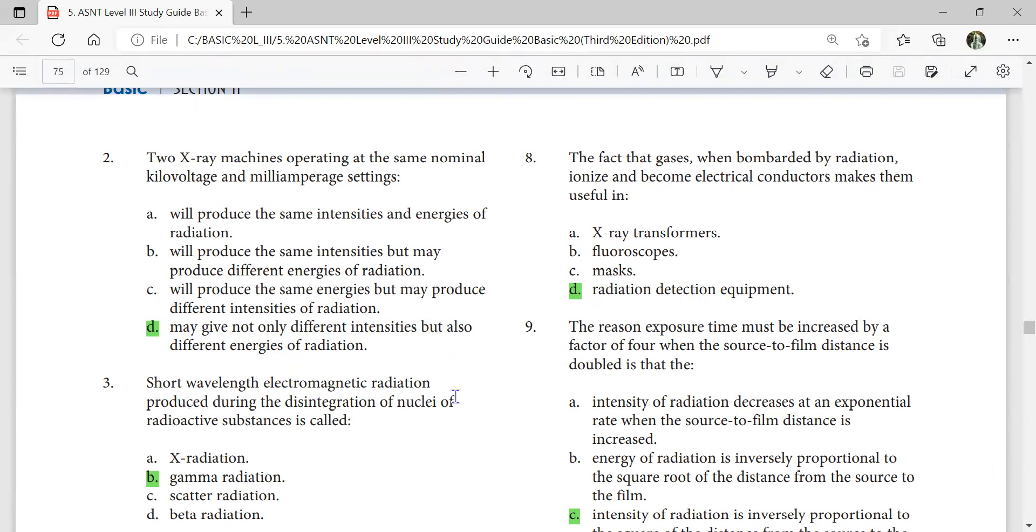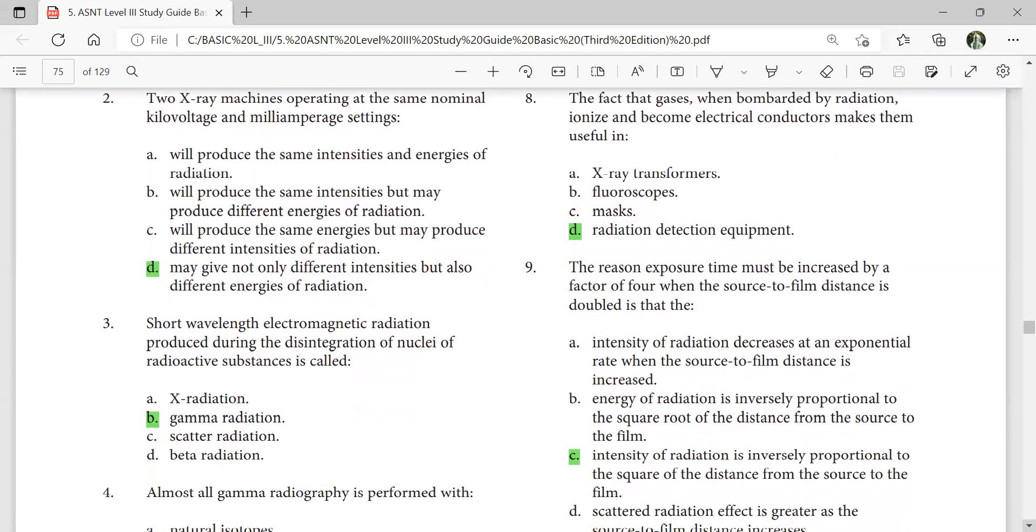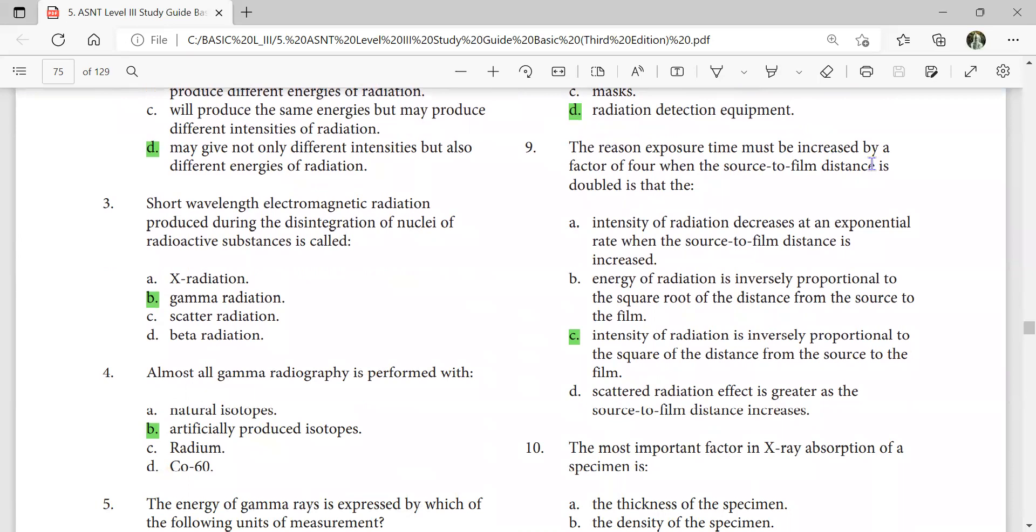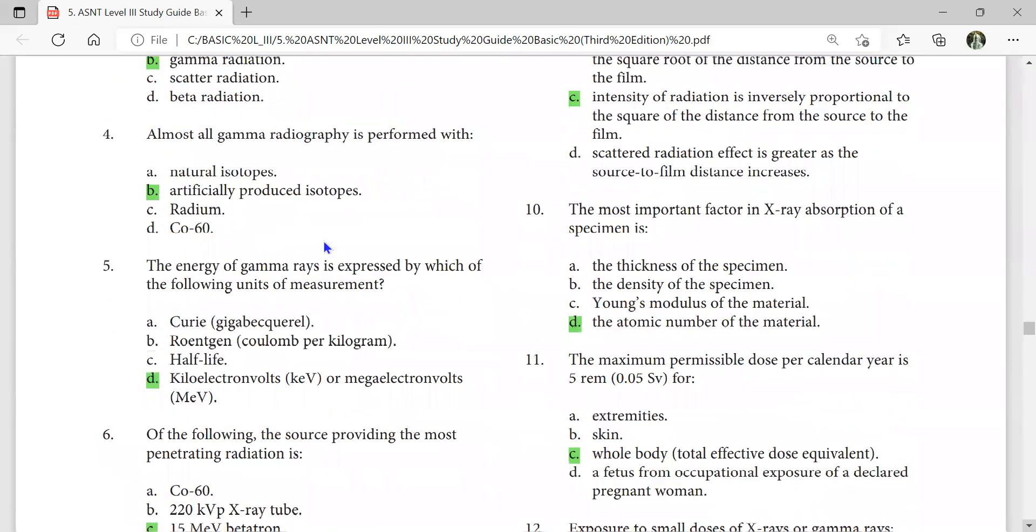Short wavelength electromagnetic radiation produced during the disintegration of nuclei of radioactive substance is called gamma radiation. The reason exposure time must be increased by a factor of four when the source to film distance is doubled is that the intensity of radiation is inversely proportional to the square of the distance from the source to the film. Almost all gamma radiography is performed with artificially produced isotopes.